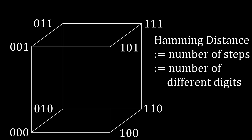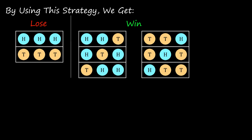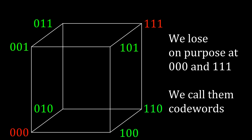We call how many steps it takes to get from one point to another the Hamming distance. For instance, 0,0,0 and 1,1,1 differ on all three of their digits, so we need three steps to go from one to the other — they have Hamming distance 3. Remember how the strategy works: the core idea is to intentionally lose together when the coin combinations are tails-tails-tails or heads-heads-heads. In this cube, those two are represented as 0,0,0 and 1,1,1. We call those two sequences codewords.